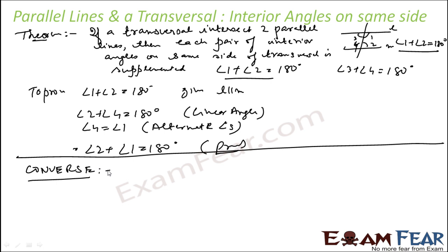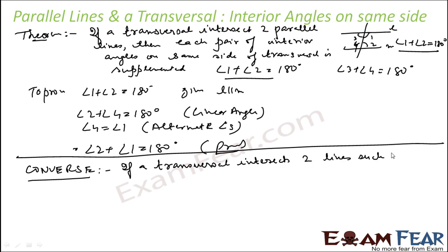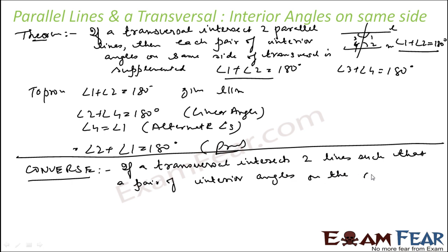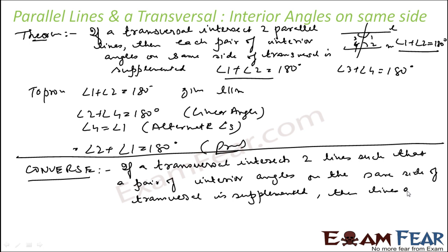Now I can write the converse statement. The converse will be: if the interior angle sum is 180 degrees, then the lines are parallel. In plain English: if a transversal intersects two lines such that a pair of interior angles on the same side of the transversal is supplementary, then the lines are parallel. That is the converse — let's check if it is a true statement or false.